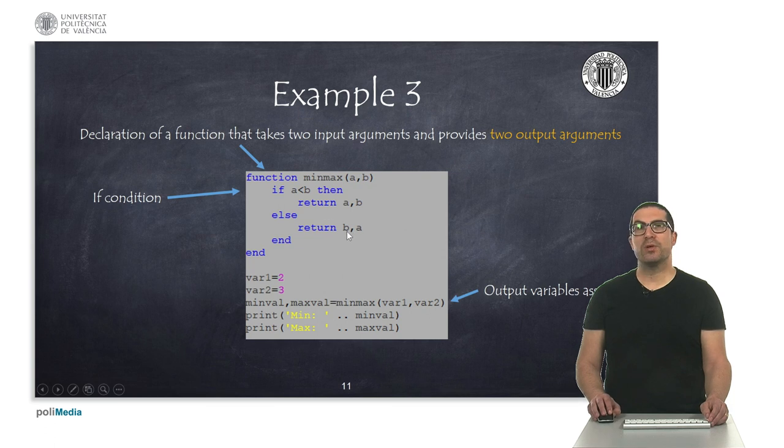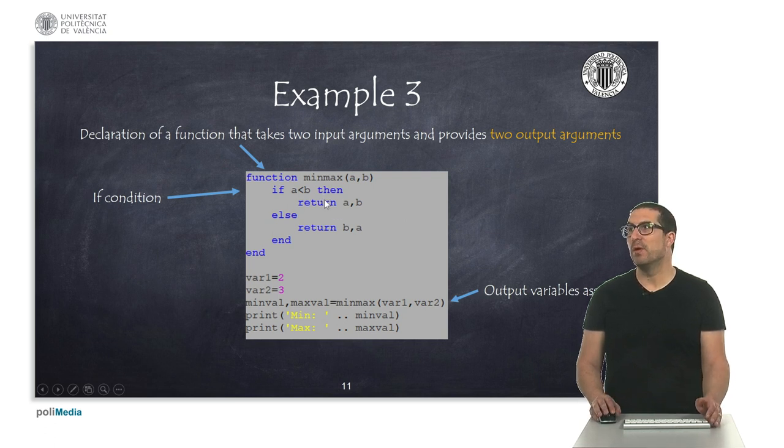Otherwise, I will return b, a, so then I always return on the first argument the minimum value, and on the second argument, I always return the maximum value. And indeed, this is what I'm doing here. I'm declaring two numbers again, I'm calling the function with the two input arguments, but here, if you look at that, we have a new variable called minval and a new variable called maxval. And these two variables, this one will always have the minimum value, and this one will have the maximum value. And this is what I'm printing there.